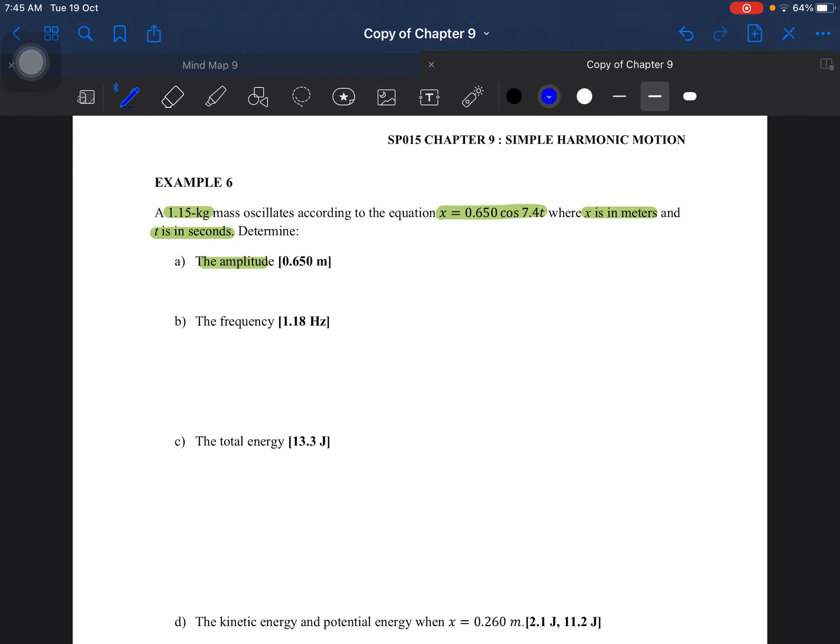So, this one, just write the general formula. A cos omega t, right? So we can see that the amplitude is this one and then omega is this one. So your amplitude would be 0.650 meter.